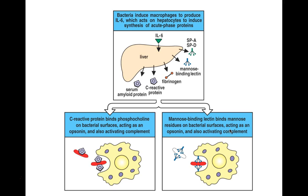CRP can also serve as a primary deposit leading to further deposit of C4 and C2, so it is possible to also activate a part of the classical complement pathway just with CRP. For mannose-binding lectin on the right, MBL will attach to mannose residues or mannose sugars on the bacterial cell surface, again serving as an opsonin to enhance phagocytosis by macrophages and neutrophils.